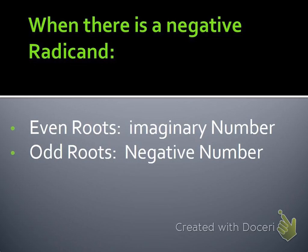The rule for negative radicands: when you multiply two numbers with the same sign you get a positive, and opposite signs give a negative. So the rule is: if you have an even root with a negative, you pull an i out. If you have an odd root with a negative, you just pull a negative out. Commit that to memory and you'll be doing fine.